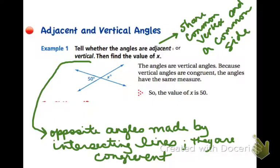So when you're looking at 50 degrees and x degrees, they are opposite, right? Across the vertex of two intersecting lines. They are vertical because vertical angles are congruent. The angles have the same measure, so the value of x is 50.